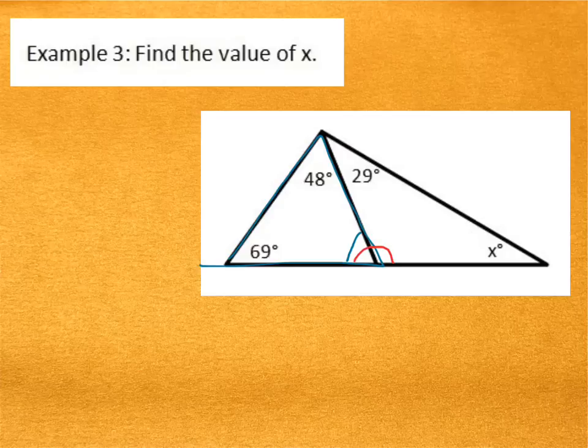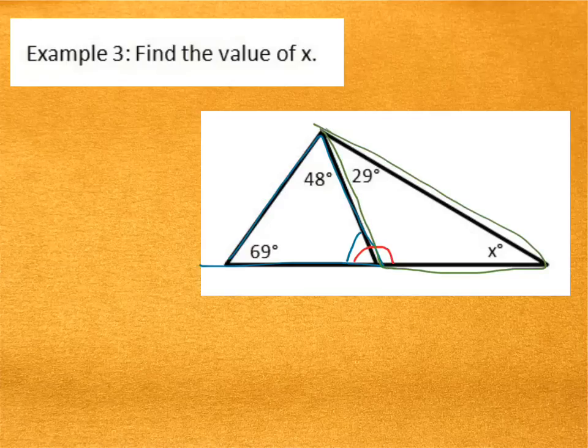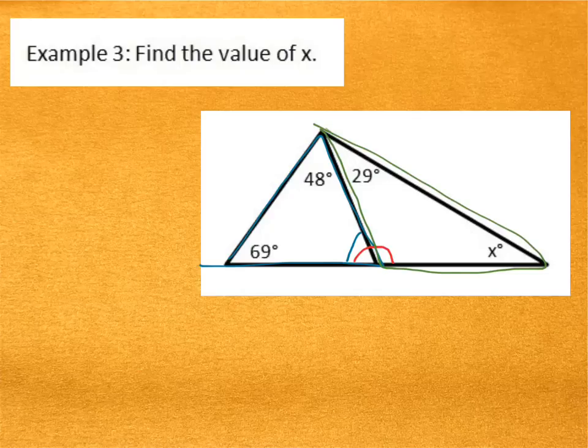We know that these are a linear pair here. So I could figure out the measure of that angle by subtracting from 180. Then finally, I could figure out the value of X by subtracting, by adding this angle and that one and subtracting from 180. That's a very possible method.